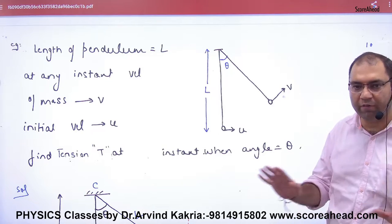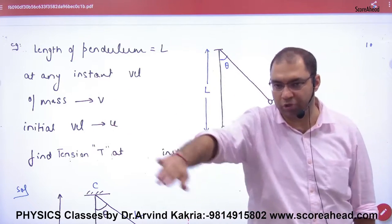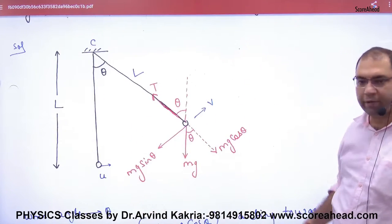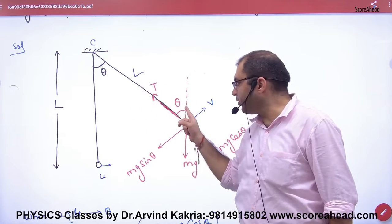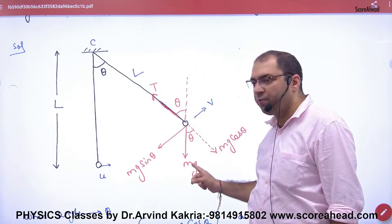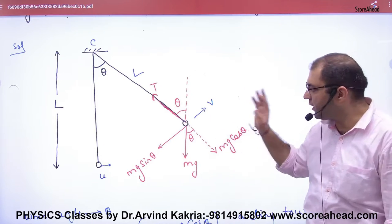We need to find tension. Rule number one: pendulum movement is part of circular motion. At angle theta, weight mg has two components: mg cos theta and mg sin theta. The velocity is v.